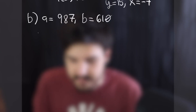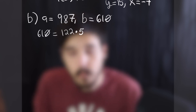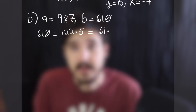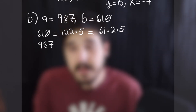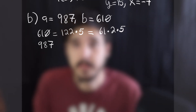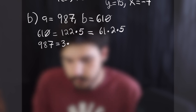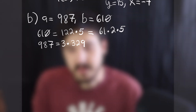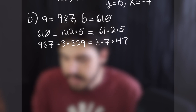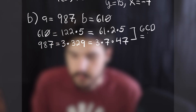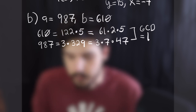So with 987 and 610: we can immediately take a 5 out of 610 because it ends in 0, giving 122. That has a factor of 2, giving 61, which is prime. So 610 equals 61 times 2 times 5. For 987, applying divisibility rules, dividing by 3 gives 329, which factors into 7 and 47. So 987 equals 3 times 7 times 47. Since the prime factors 3, 7, 47 and 2, 5, 61 share no overlap, the GCD equals 1.